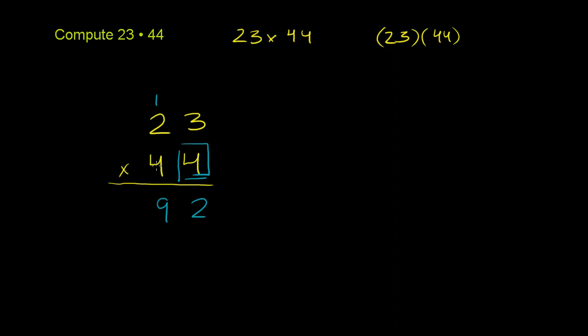Now we want to figure out what this 4 times 23 is. When you do it mechanically, when you just learn the process, you stick a 0 here. The whole reason why you're putting a 0 here is because you're now dealing with a 4 in the tens place. If you had another digit and you're dealing with a hundreds place, you'd put more zeros here.